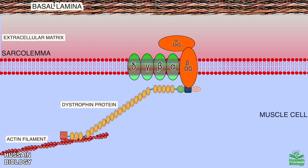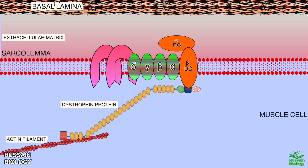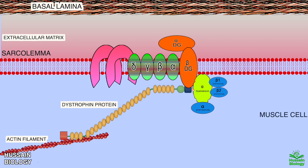The sarcospan protein comes in and binds with the sarcoglycan complex. Looking at the intracellular activities within the muscle cell, two important proteins bind with the dystrophin protein: first, alpha-dystrobrevin binds at the extreme end of the dystrophin protein, and then alpha-dystrobrevin binds with the syntrophins in the form of alpha, beta-1, and beta-2 syntrophin proteins.